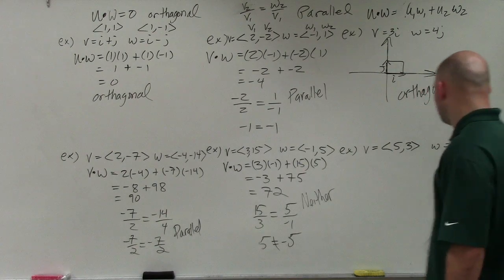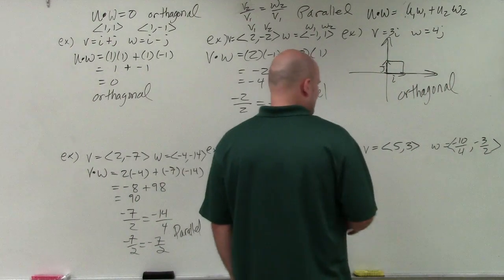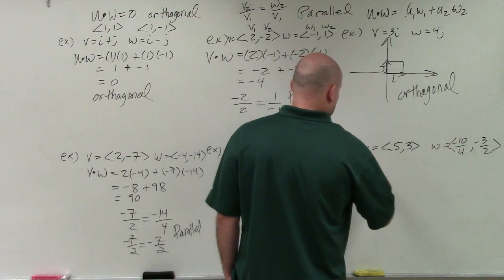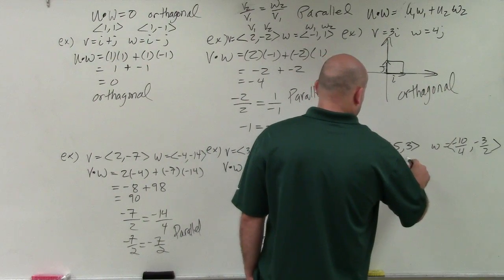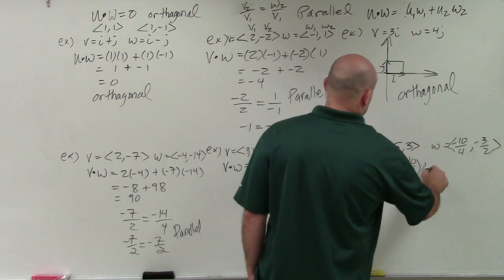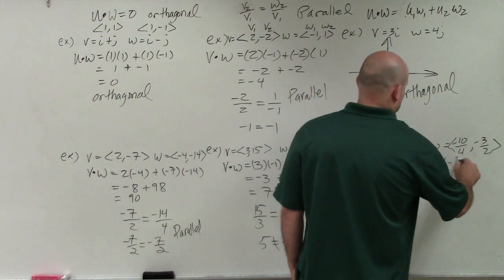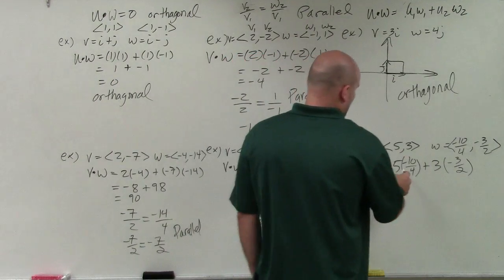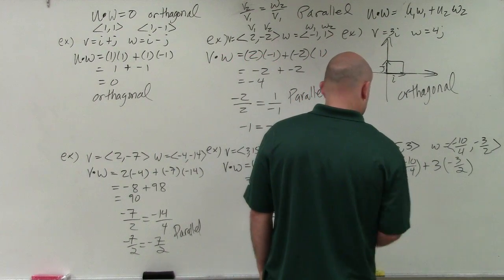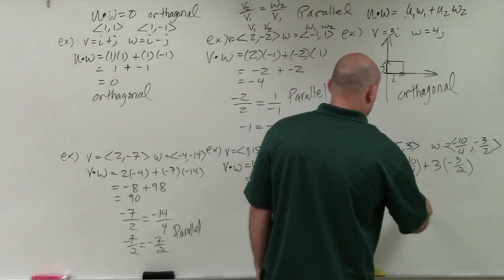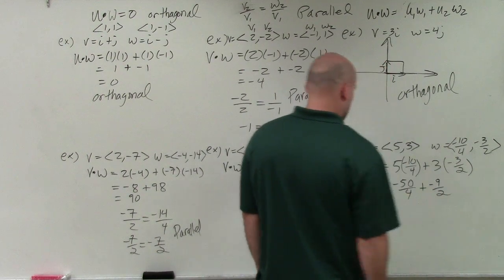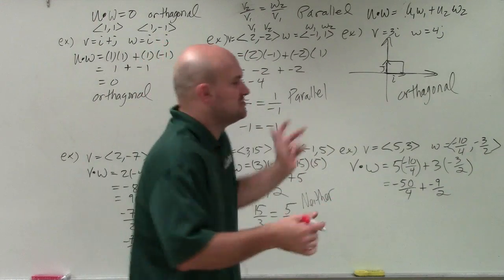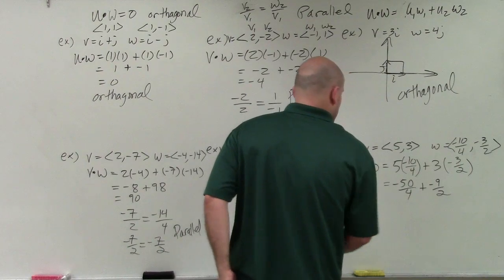Last example. Let's go ahead and apply the dot product. This doesn't look like fun, does it? But that's OK. V dot W. So that's going to be 5 times negative 10 fourths plus 3 times negative 3 halves. You know, maybe let's simplify some work and let's think ahead. So that's going to be a negative 50 over 4 plus a negative 9 halves. Again, a negative plus another negative is not going to give me 0, so I'm not even going to worry about finishing my fractions.